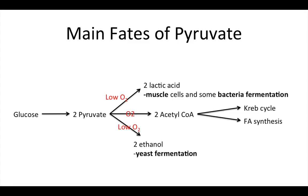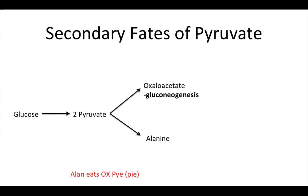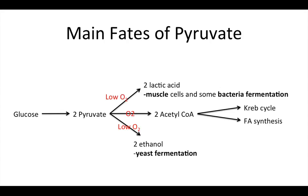Now we're going to spend a little time on the fates of pyruvate. I have one slide for the main fates and a second slide for secondary fates. If oxygen is present, pyruvate proceeds to become acetyl-CoA, which then jumps into the Krebs cycle or fatty acid synthesis.